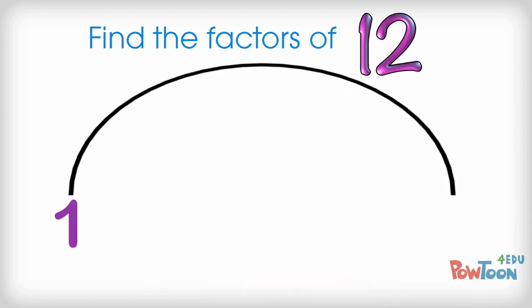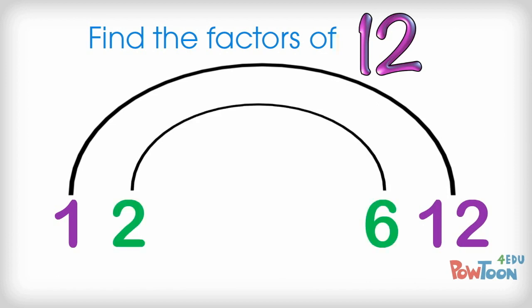We always start off with 1 and the number itself using a space in between, and then we move up from there till we catch all the factors in between.